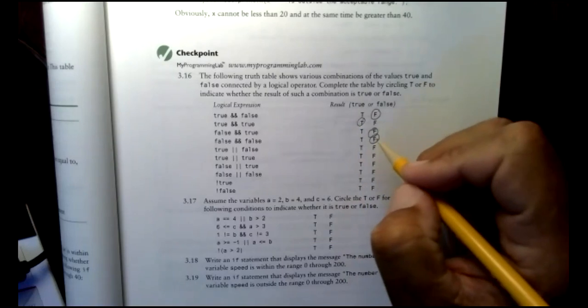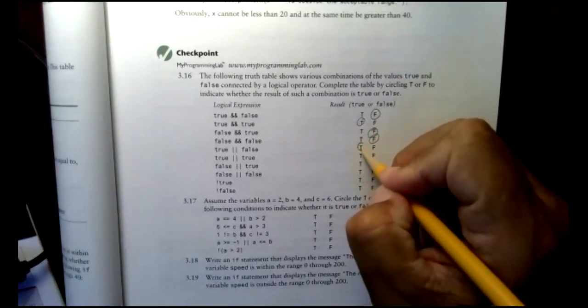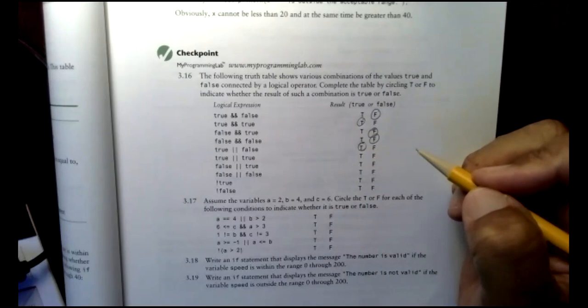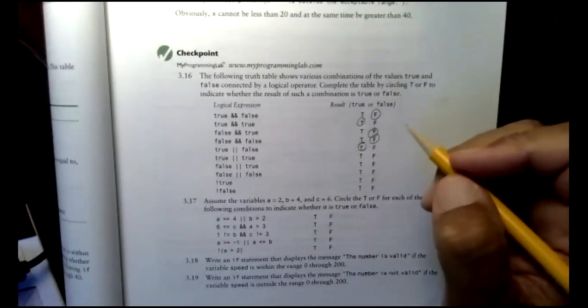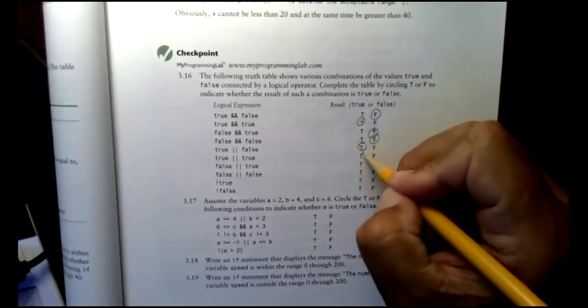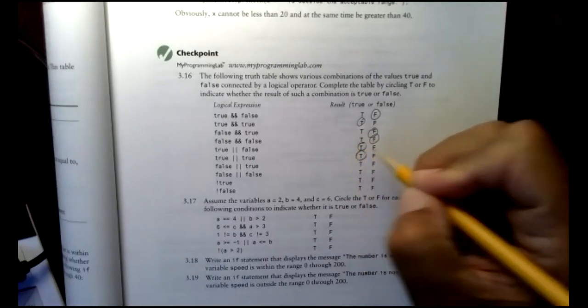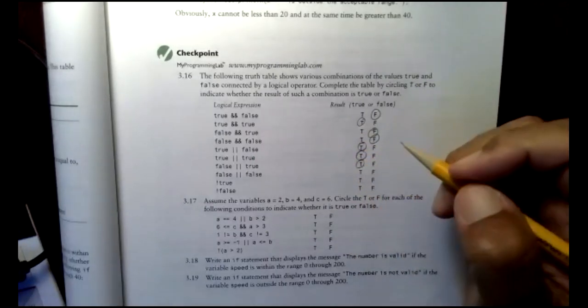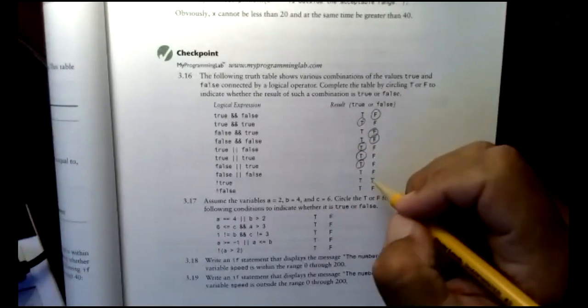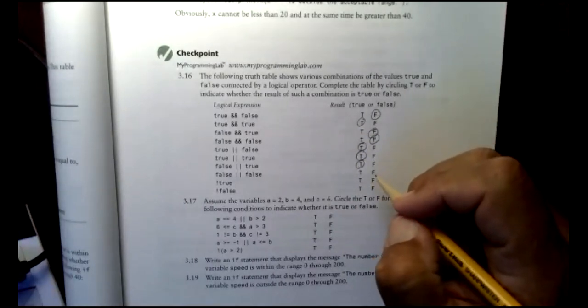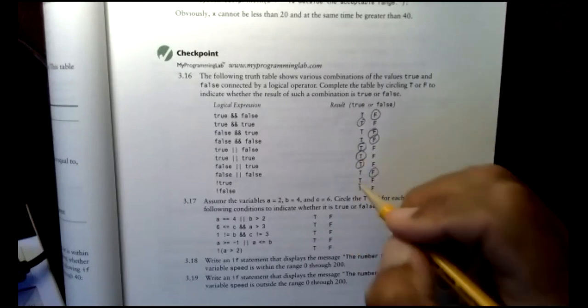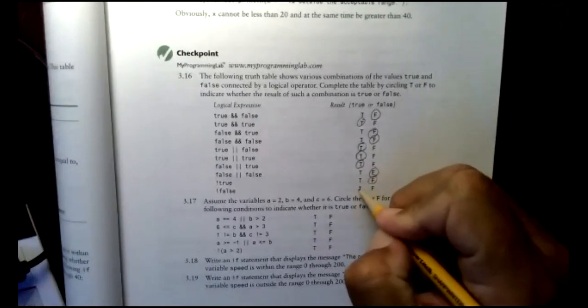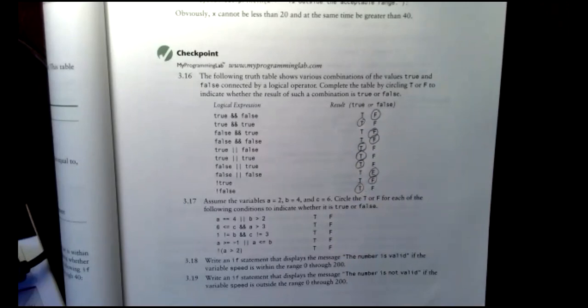True or false? True. Good. True or true? True. False or true? Either or. Right. So it's true. And then false or false? False. False. False. Right. And again, the not of true is false. The not of false is true. They go opposite.